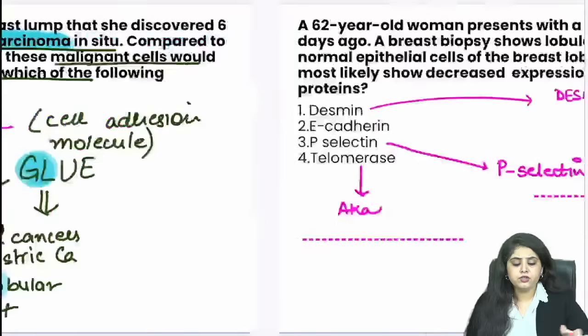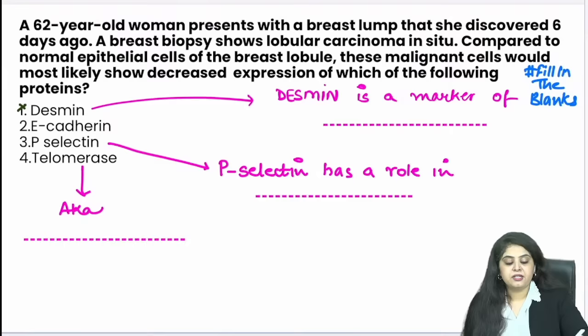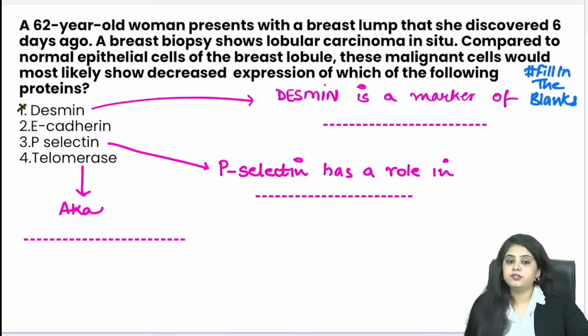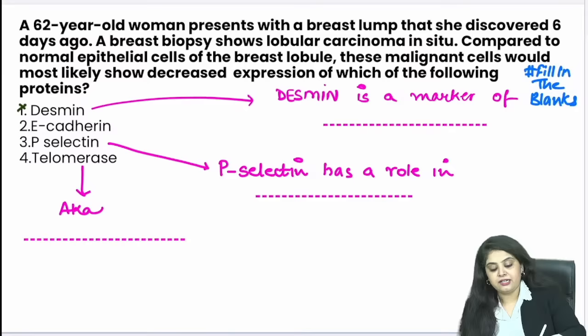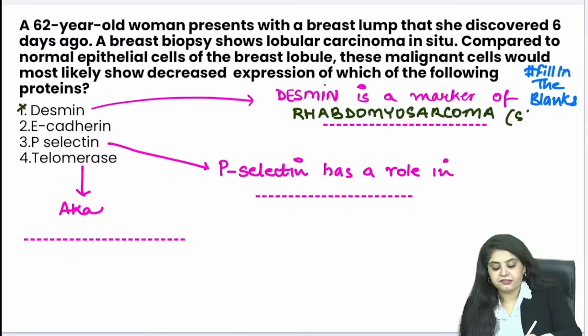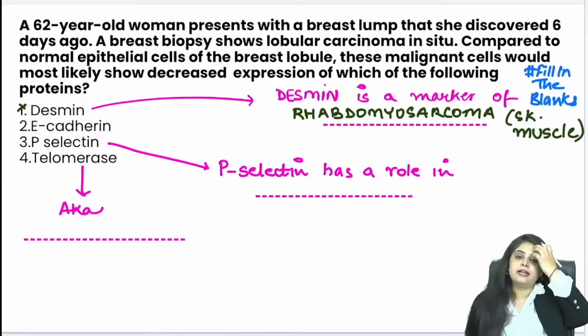Fill in the blanks for the other options: Desmin — Desmin is not a mutation, it is a marker. Desmin is a marker of skeletal muscle tumours, specifically rhabdomyosarcoma. Note: Vimentin is a broader marker of mesenchymal/sarcoma tumours in general — liposarcoma, osteosarcoma, leiomyosarcoma, fibrosarcoma — not just rhabdomyosarcoma. Any sarcoma can be Vimentin positive.